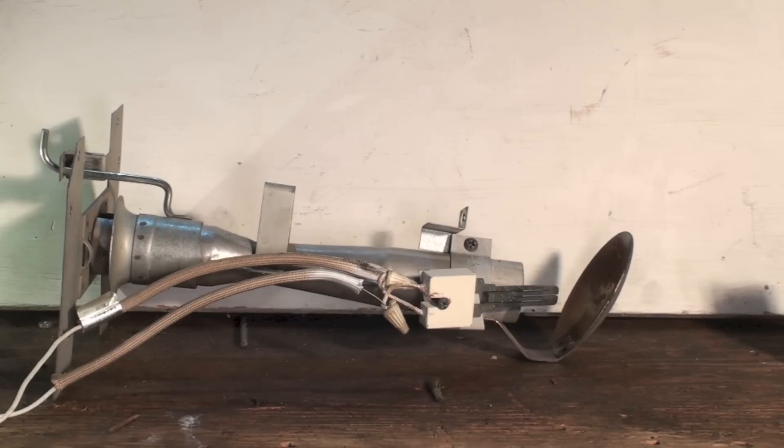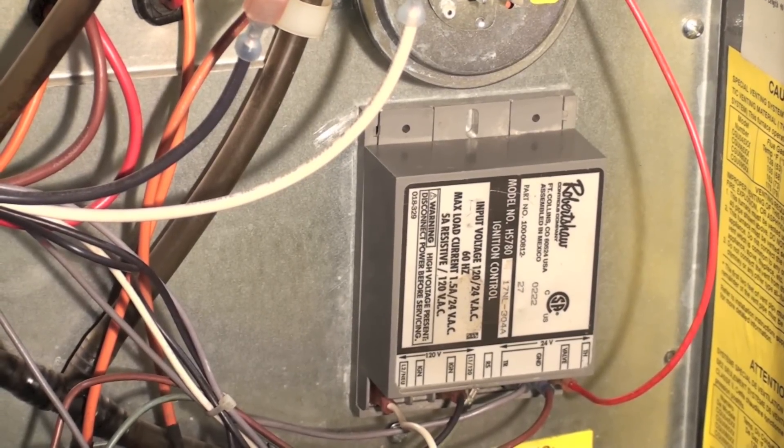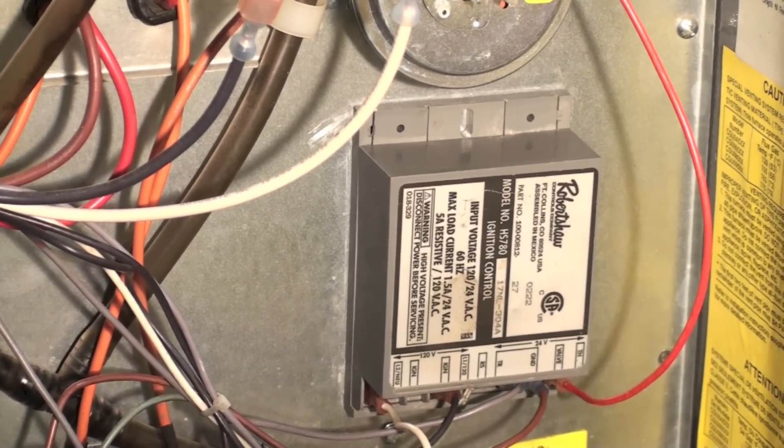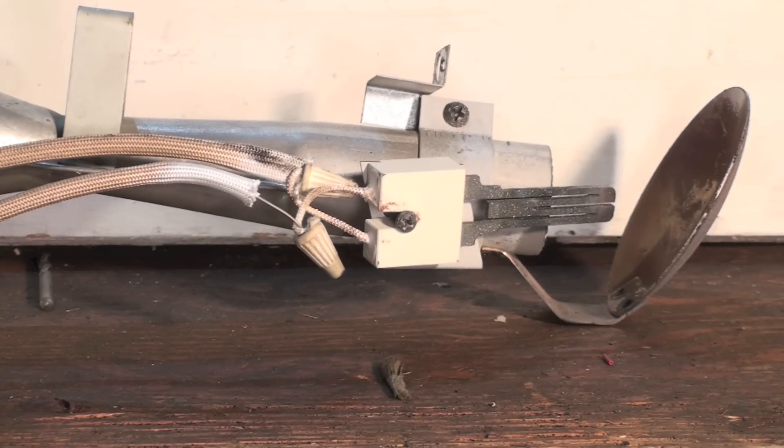The Robert Shaw HS 780 control that we have on this thing. There's that control there. That's that Robert Shaw HS 780. It was not set up for a flame rod.